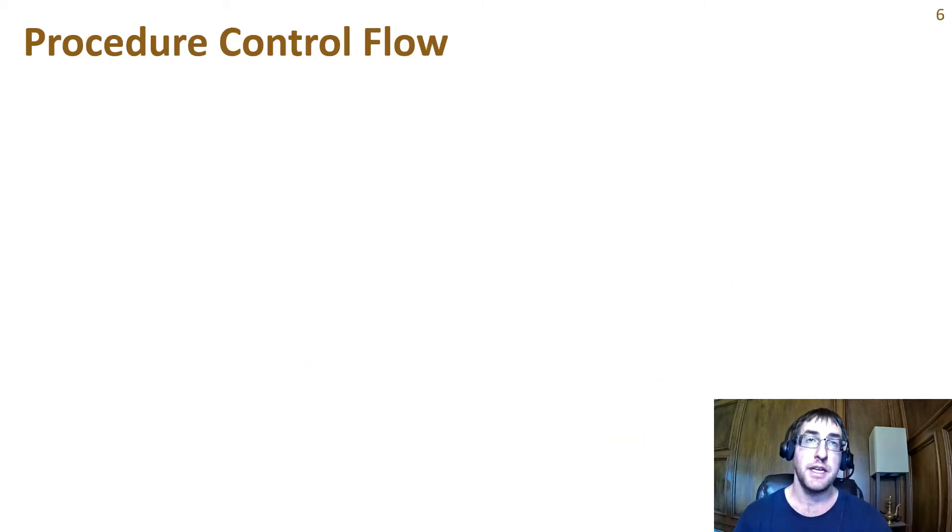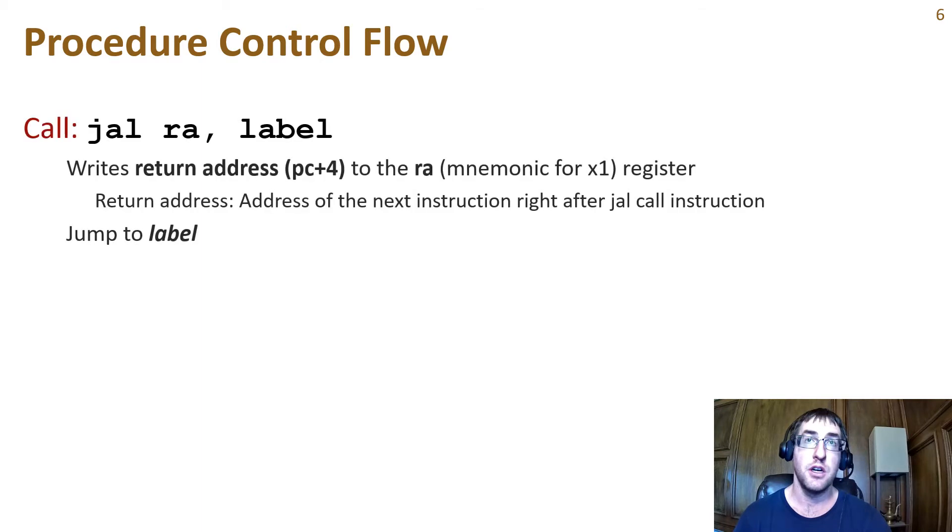We'll start by looking at how control flow goes through a procedure call. A call is made by first saving the return address to the RA register, which is x1 in RISC-V, and then jumping to the label at the start of the procedure.